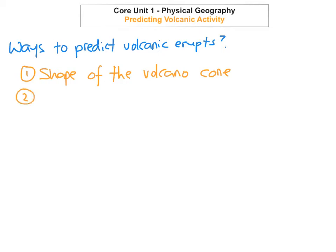The second way is by looking at whether there are any small earthquakes. If there are lots of small earthquakes and they're close to a volcano, then scientists will observe these, as this may indicate that there could possibly be a volcanic eruption — because before volcanoes erupt, you can very often get small earthquakes.